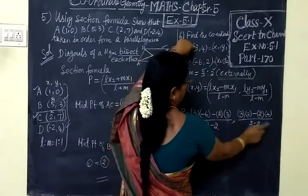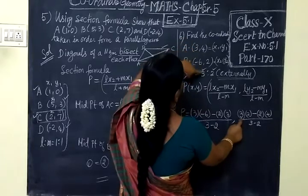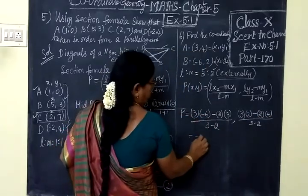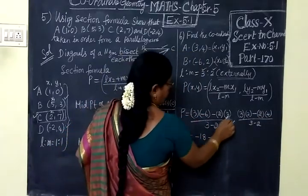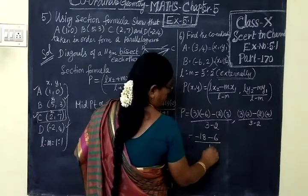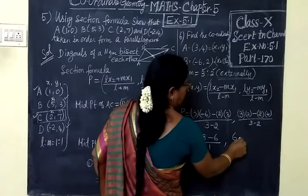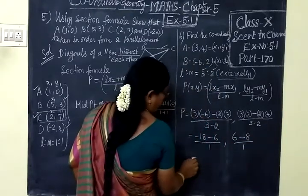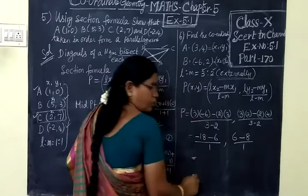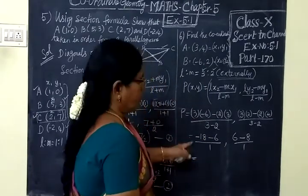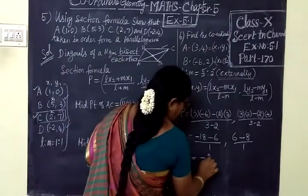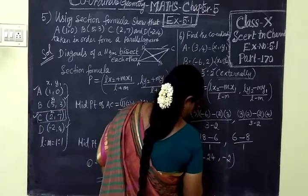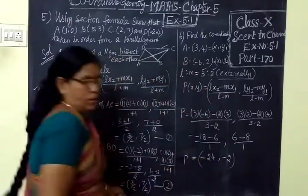Comma, here 3 minus 2. Then L, Y2 is 2, Y1 is 4. Now minus 18. Minus 3 twos are 6, by 3 minus 2, 1. Then 3 twos are 6, minus 4 twos are 8, by 3 minus 2, 1. So minus 18 minus 6. If both are minus means, add and put greater number sign. So minus 24 by 1. Here minus 2. Now we get the answer for the 6th sum.